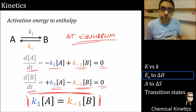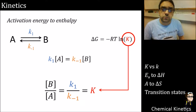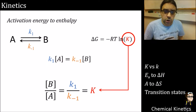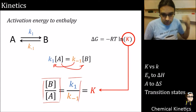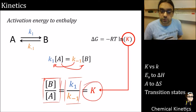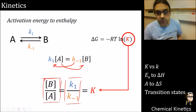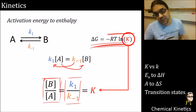Assuming everything's at equilibrium and these rates are the same, we can rearrange to get a ratio of concentrations equal to a ratio of rate constants. You should also know from thermodynamics that a ratio of concentrations equals an equilibrium constant - the same K that appears in the equation delta G equals negative RT ln K. This is one of the core equations of physical chemistry you should be able to recall instantly.